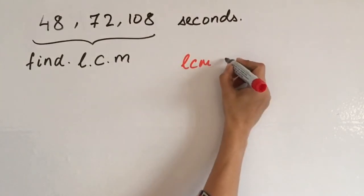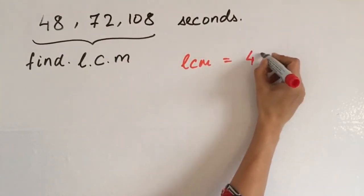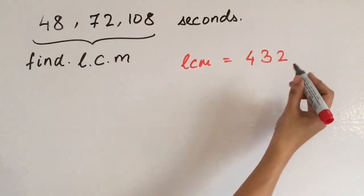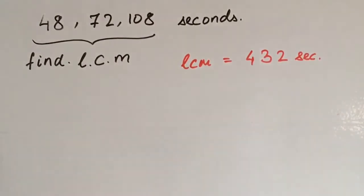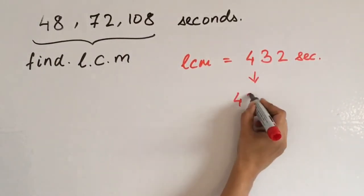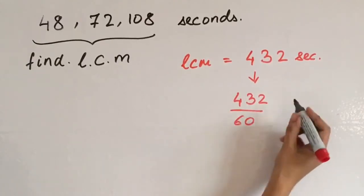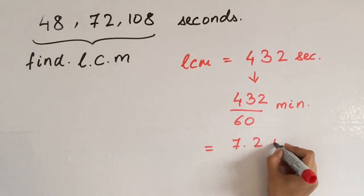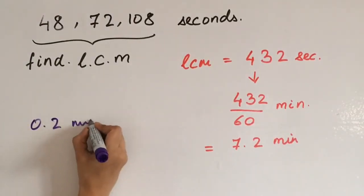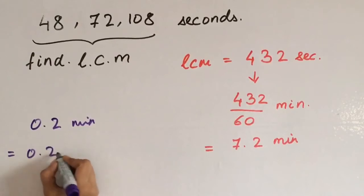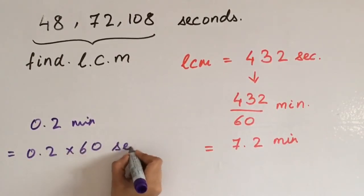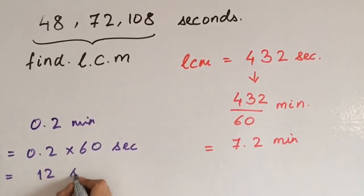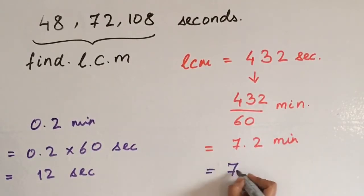On calculation, you can check it, the value is 432. Now this is in seconds. If we want to convert this in minutes, we will divide 432 by 60. We will get 7.2 minutes. If we convert 0.2 minutes in seconds, we multiply it again by 60. What you get is 12 seconds. Therefore, at 7 minutes and 12 seconds, traffic lights will change again simultaneously.